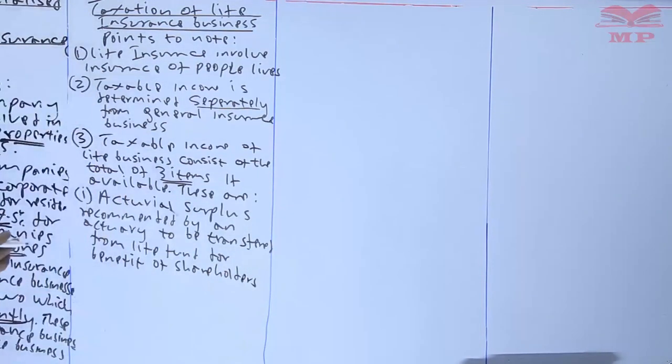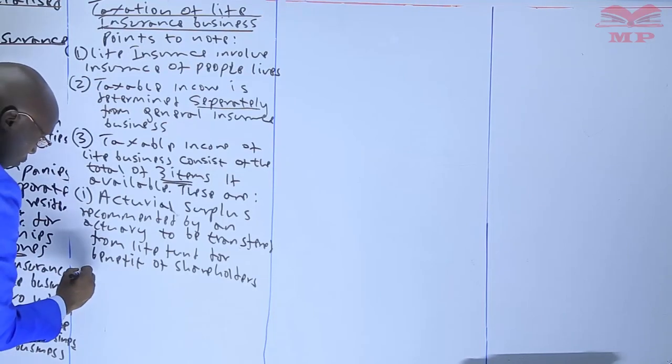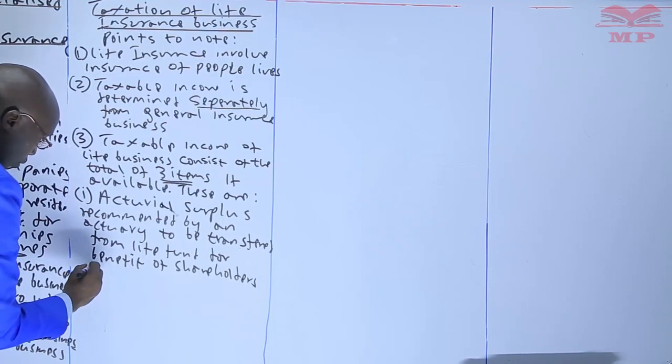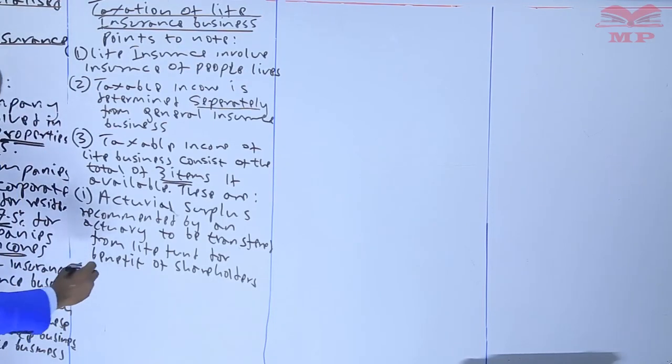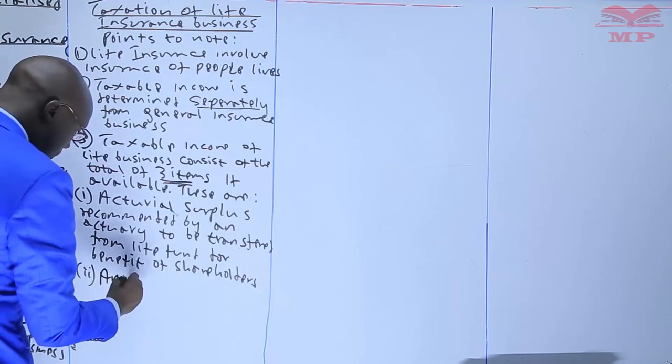Let me write them down and then we will discuss them. Number two: another taxable income for life business is any other amount transferred from the life fund.